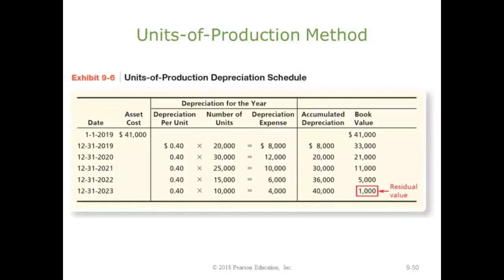Depreciation expense is going to go up or down depending on the amount of units or miles driven. Now I've got my depreciation expense computed, and I'll keep track via accumulated depreciation. I can't depreciate any more of the asset's value once my accumulated depreciation hits the depreciable cost. Likewise, once my book value equals the residual value, I can't do anything more to it. The same rules apply for units of production as for straight-line.